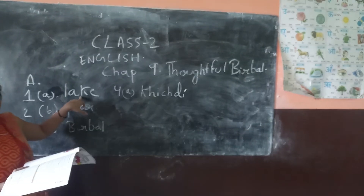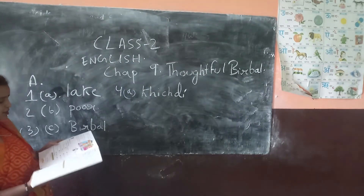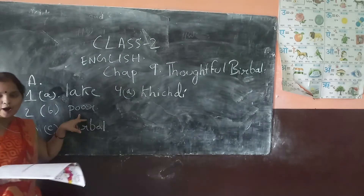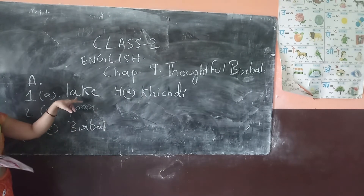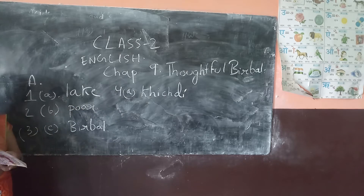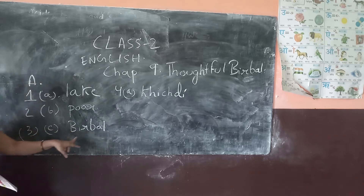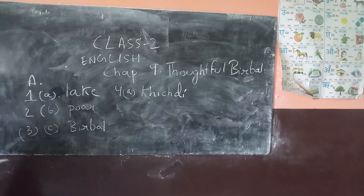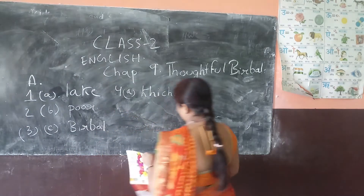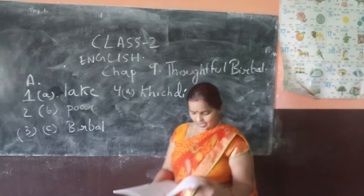The next one: Bilbar found a man who was poor. The correct answer is Bilbar — option C, Bilbar. And the fourth one is, Bilbar knows who he is, Hitchery. Option A: Hitchery.